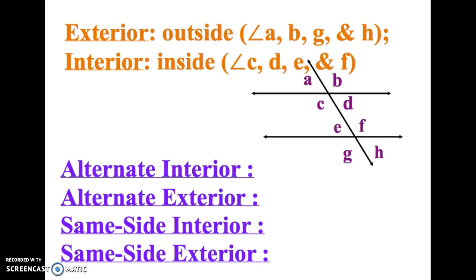Exterior angles are angles that are outside the parallel lines. So for example, A, B, G, and H, those are outside the parallel lines.